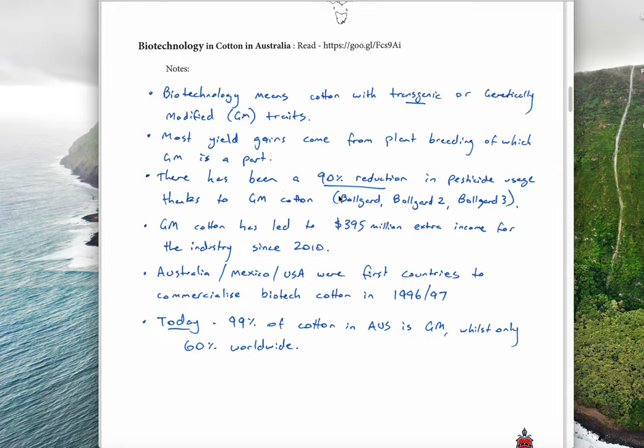Most yield gains, so improvements in yield recently, have come from plant breeding, choosing different varieties and breeding them together, but that also includes genetic modification. There's different versions of Bollguard - first Bollguard one, then Bollguard two, and now Bollguard three. With Bollguard two, there's been a 90% reduction in pesticide usage because the bollworm is being killed by the toxin that the Bollguard cotton is producing. Bollguard one had one method of action, Bollguard two had two different ways of killing it, and Bollguard three has three different methods. That's an attempt to prevent the buildup of resistance.